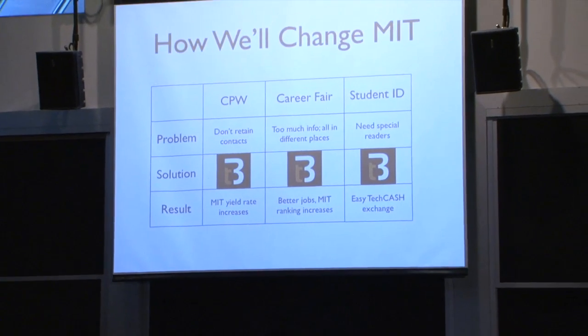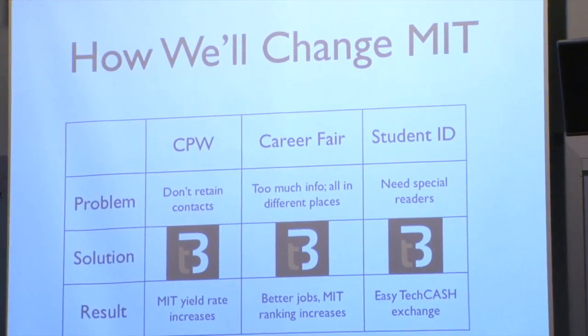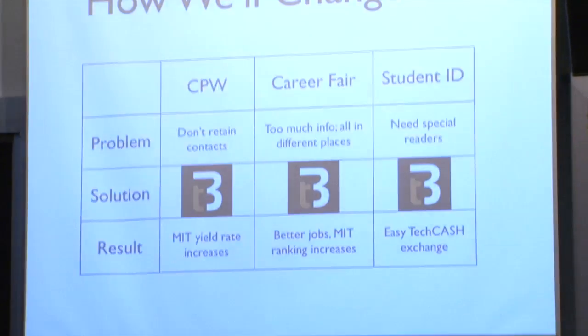Lastly is student IDs. All MIT students have IDs that already include NFC technology and a magnetic strip, but they require a special reader. A common example is tech cash: when student groups ask for donations in the Infinite Corridor, many people can only pay with tech cash, but the only way to accept it is writing an ID on paper — sometimes illegible. With our technology, all a student group needs is a smartphone. By downloading our app, they tap the student's ID and immediately download the tech cash information, making tech cash exchange much easier.